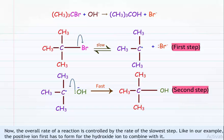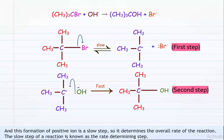The overall rate of a reaction is controlled by the rate of the slowest step. Like in our example, the positive ion has to form first in order to combine with the hydroxide ion. This formation of the positive ion is a slow step, so it determines the overall rate of the reaction. The slow step of a reaction is known as the rate determining step.